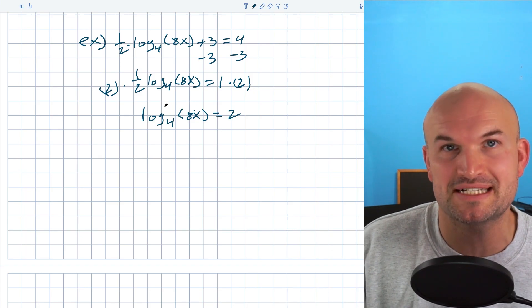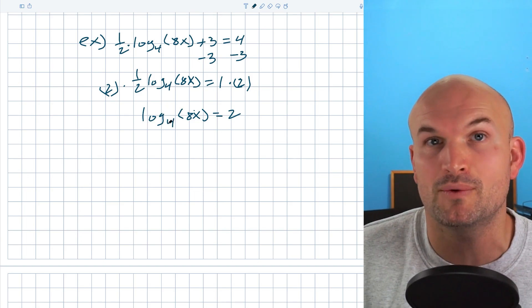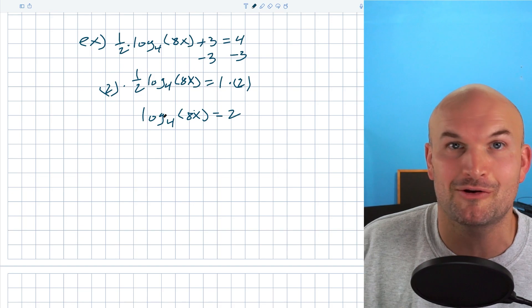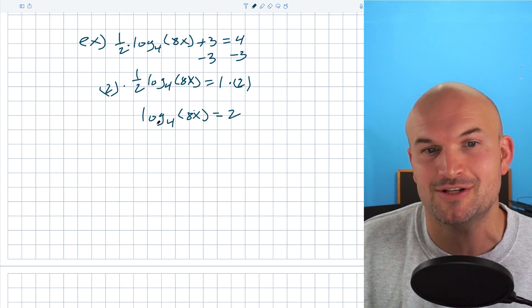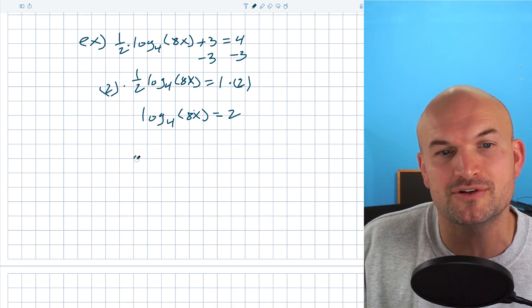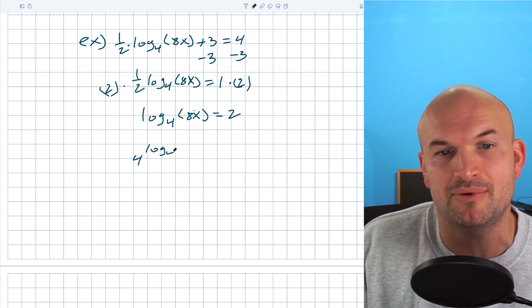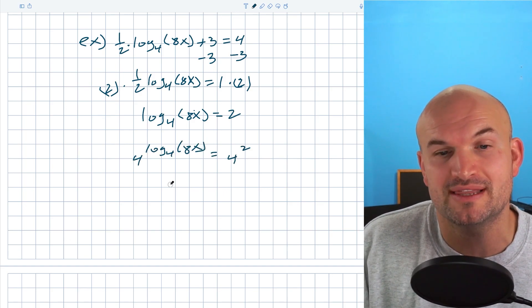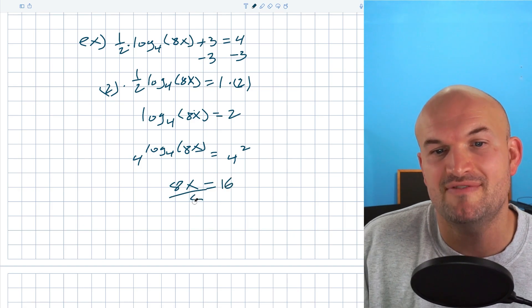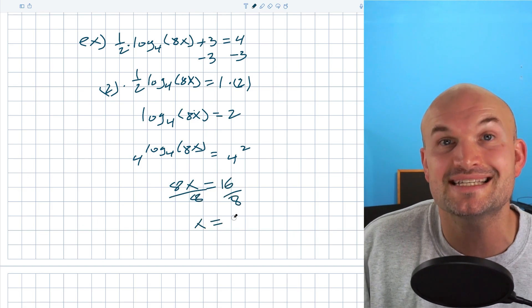Now, hopefully you recognize here in the first example, I had a logarithm base 2. So therefore we raise it to the second power. In the third example, I had logarithm base 3. So we exponentiated with a base 3. In this example, we have a log base 4. So therefore I'm going to exponentiate with a base 4 on both sides. And now we just are left with 8x is equal to 16 divided by 8, and x is going to equal 2.